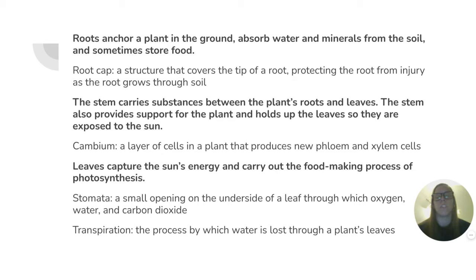Leaves capture the sun's energy and carry out the food-making process of photosynthesis. A stomata is a small opening on the underside of a leaf through which oxygen, water, and carbon dioxide enter. Transpiration is the process by which water is lost through a plant's leaves.